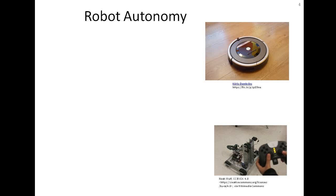Now let's discuss robot autonomy. Autonomy means that a robot is capable of completing a task without help or intervention from a human being. Autonomy is related to decision-making power — the freedom of making decisions.